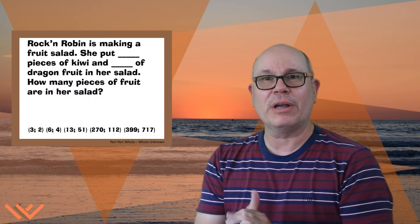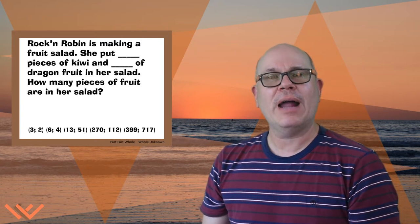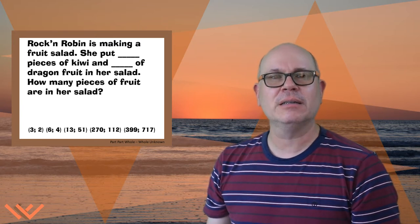Hey, today we're working with Robin, or Rockin' Robin as I like to call her. So Rockin' Robin is making a fruit salad. She put six pieces of kiwi and four of dragon fruit in her salad. How many pieces of fruit are in her salad?